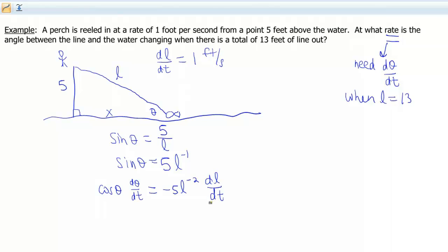Fantastic. So we need D theta DT. We know L is 13. We know DL DT, and let's go back and look at this one again. If I'm reeling this in, is this rate a positive rate or a negative rate? And this rate actually is gonna end up being a negative. I should put that in there to begin with. So here, this is because the line is coming in. So that's kind of a negative idea when you think about it. If the line were going out, that would be a positive idea, because you'd be adding more line to it.